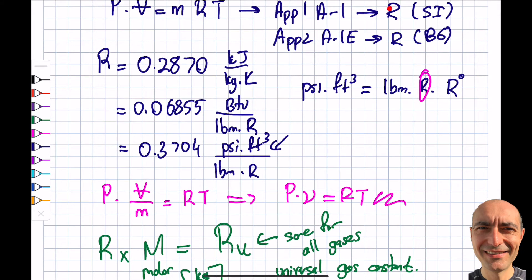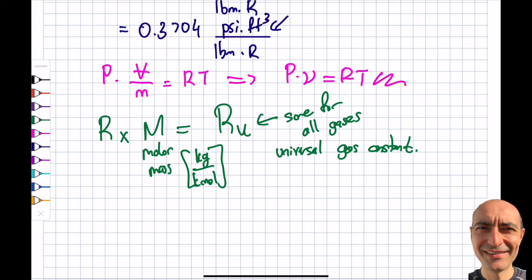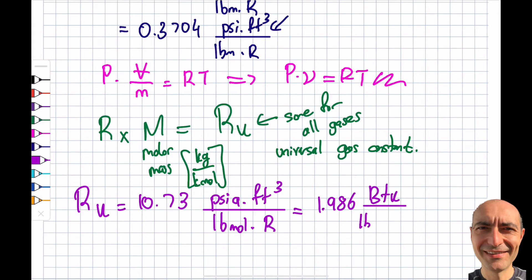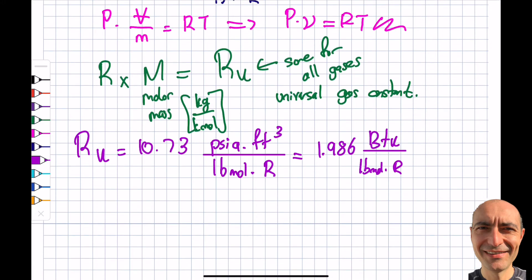By the way, the molar mass information is also given in A1 and A1E, so you can access it from the same table. I will write over here what R_u is. R_u will be constant for every single gas: 1545.4 psia·ft³/(lbmol·°R), or this is also 1.986 BTU/(lbmol·°R).